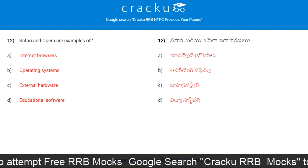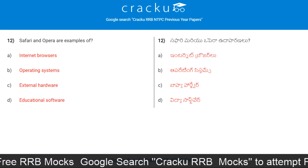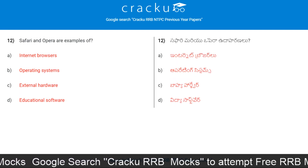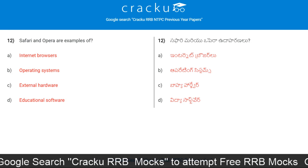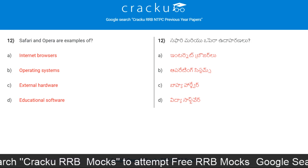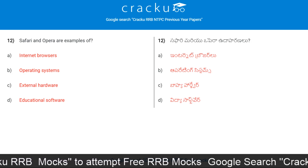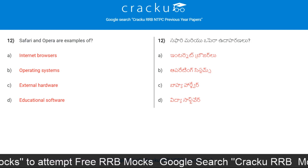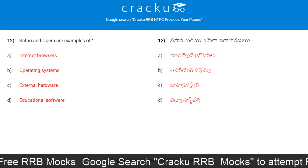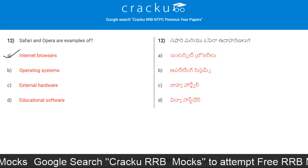Next question. Safari and Opera are examples of: Internet browsers, operating systems, external hardware, or educational software. The correct answer is Option A, Internet browsers.